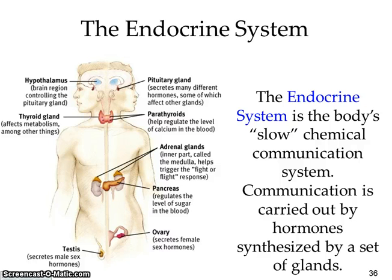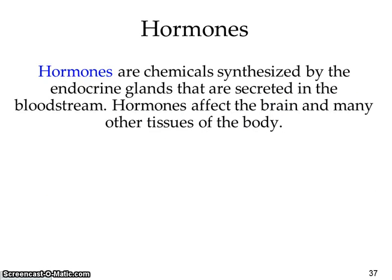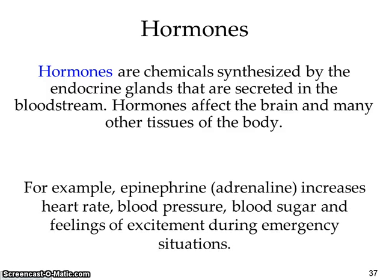The hypothalamus is the brain region that controls the pituitary gland. The adrenal glands have an inner part called the medulla that helps trigger the fight-or-flight response. The pancreas regulates blood sugar, ovaries are for females, and testes are for males. Hormones are chemicals released throughout our body thanks to the endocrine system, and they affect everything in our body.